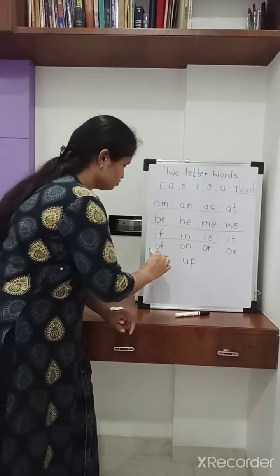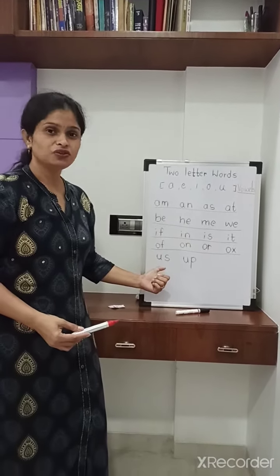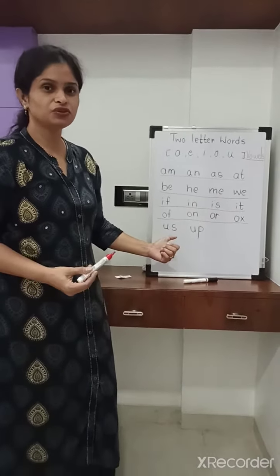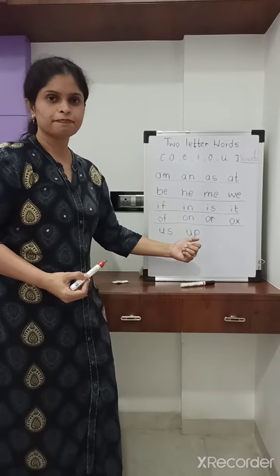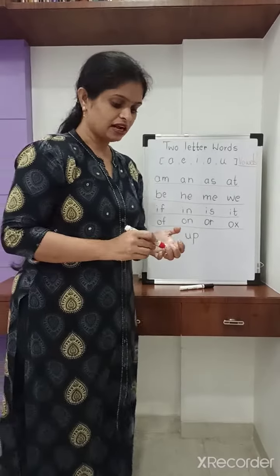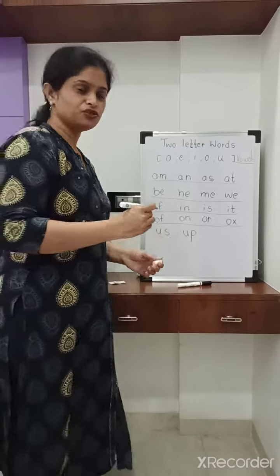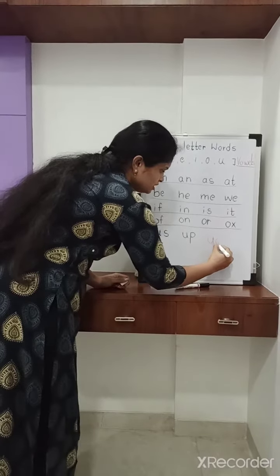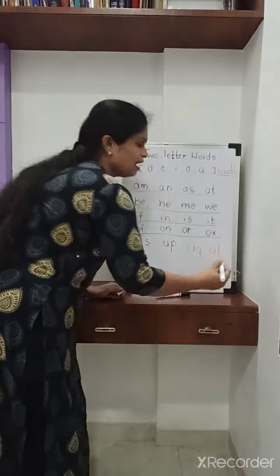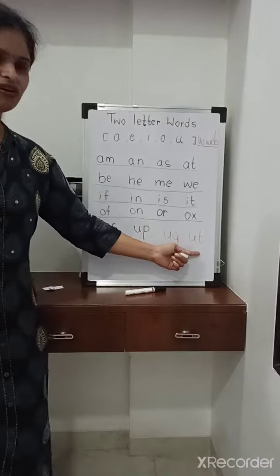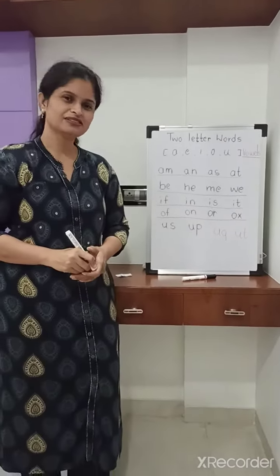So we have done with the letter O. Now we will move to letter U. The sound of letter U is: US, UP. But when we start letter blending and word blending, that time you will use this one. U, G — UG. U, D — UD. This two letter word helps to make three letter words. So thank you, kids. Thank you, guys.